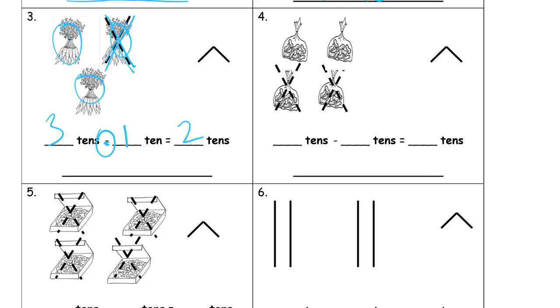And our number bond, we still have our whole would be 30, and our parts are 10, which is how much we subtracted, and 20 is the other part, what's left.